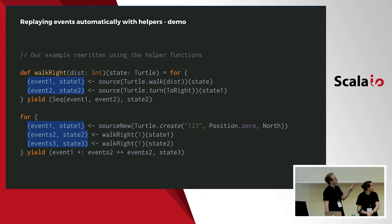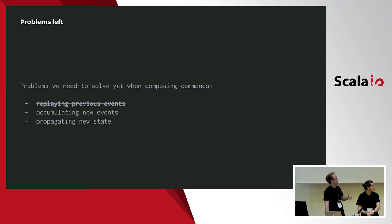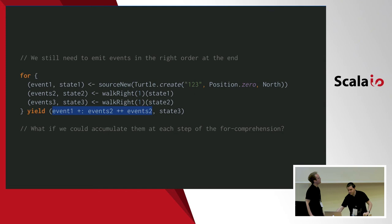To sum up, here's how our example looks now. We've basically resolved the first problem: by using such helpers, we no longer need to replay intermediate events at every step. The first problem is solved. How about the second one?